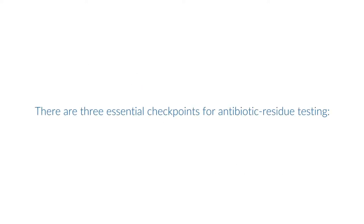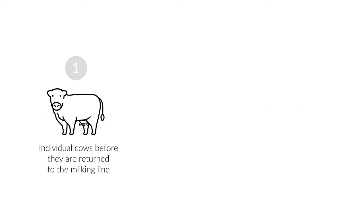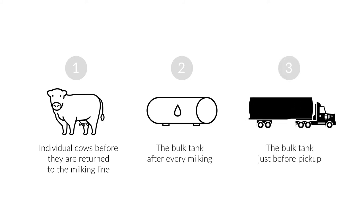There are three essential checkpoints for antibiotic residue testing: individual cows before they are returned to the milking line, the bulk tank after every milking, and the bulk tank just before pickup. Each point offers its own benefits.